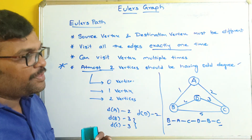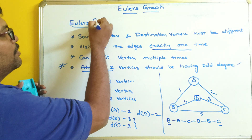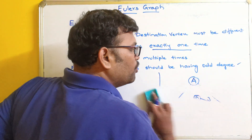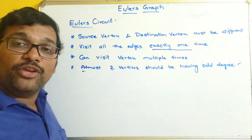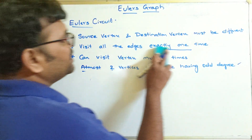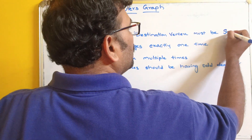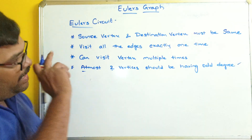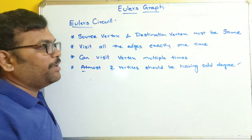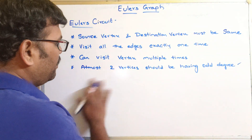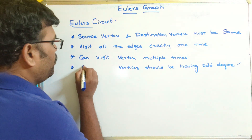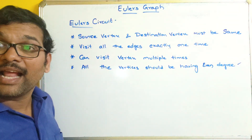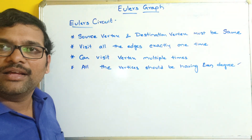Now let us move on with the Euler's circuit. If it is a circuit, the source vertex and the destination vertex must be the same. The second condition: visit all the edges exactly one time, and can visit any vertex multiple times. For the Euler's circuit, all the vertices should be having even degree. If all the vertices are having even degree, then we can form the Euler's circuit.